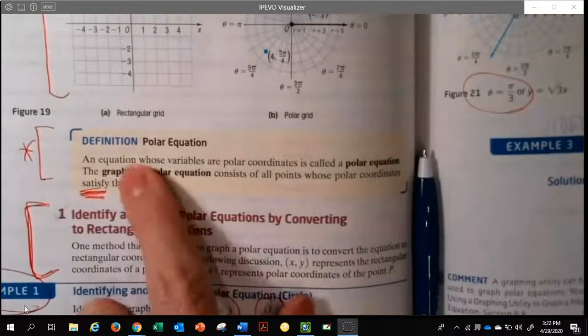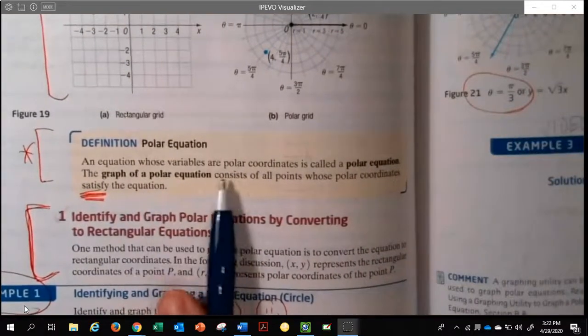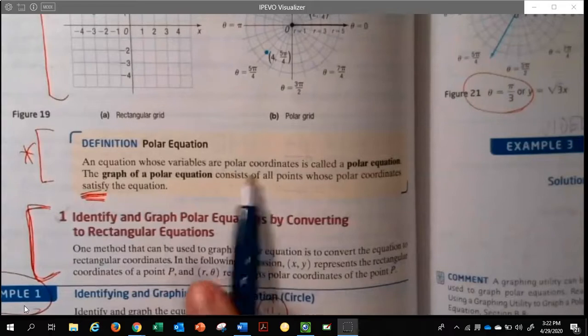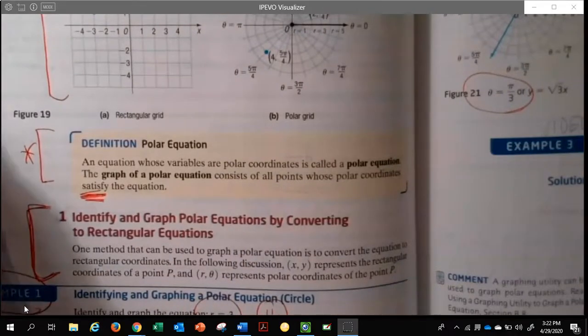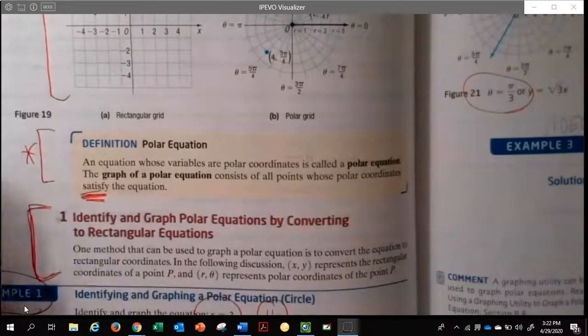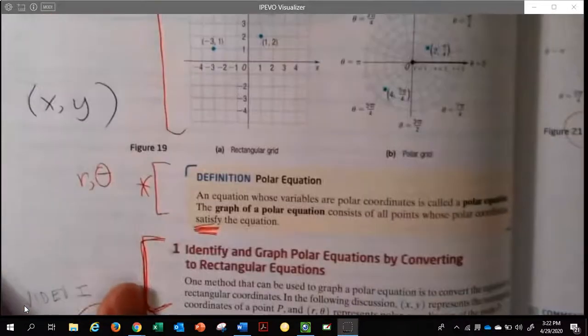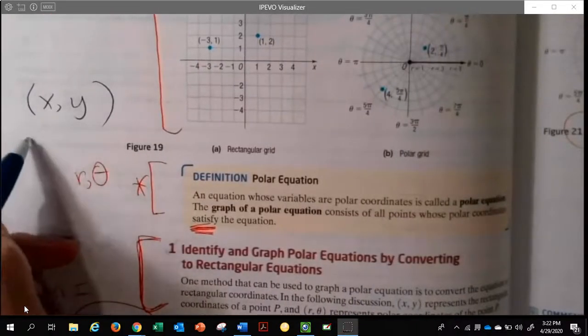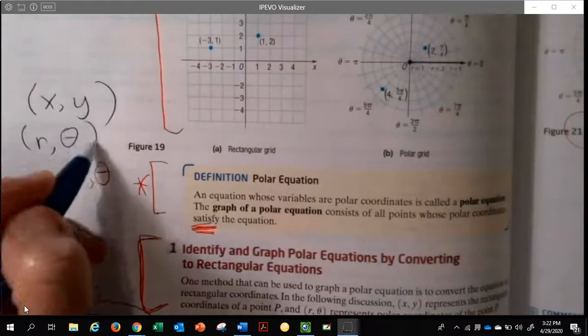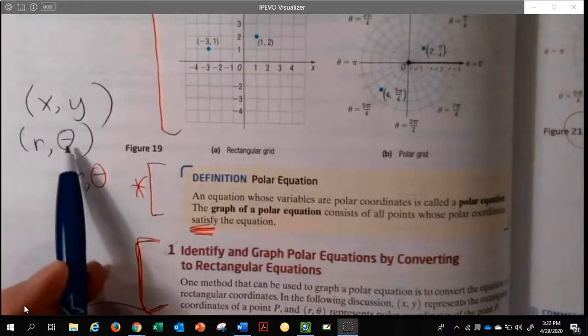There is a definition. It's an equation whose variables are polar coordinates. And by the way, we've been used to doing x, y, and we're now going to have what's called r, theta—a radius and an angle.